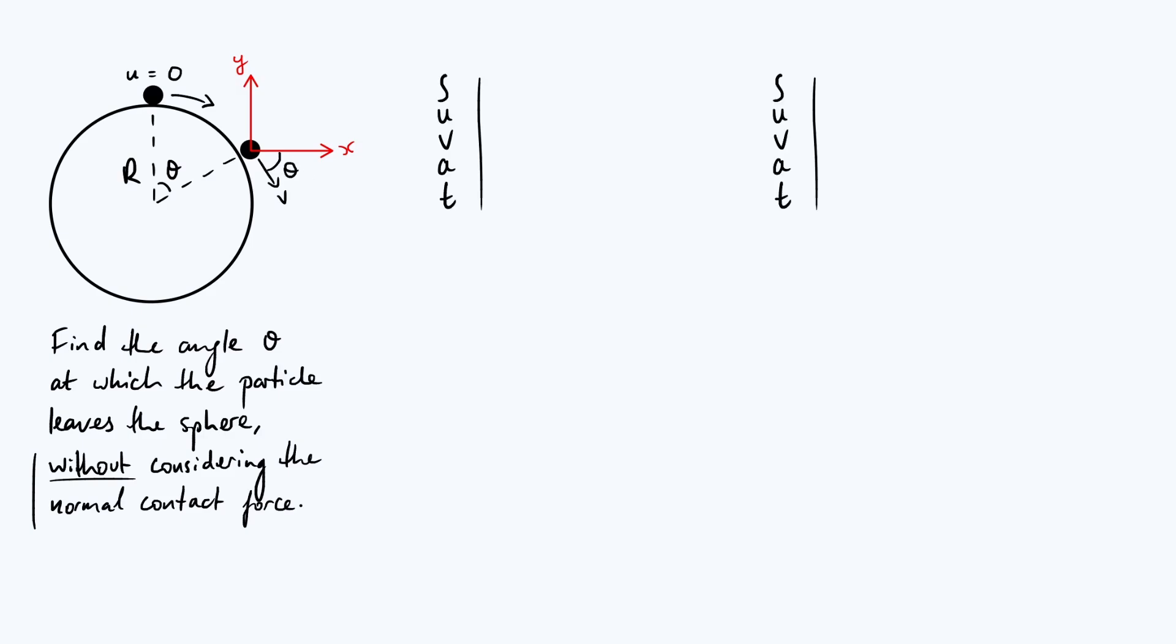I've written out SUVAT twice because as soon as the particle loses contact it's going to be in freefall. The only force acting on it will be its own weight, so it's going to have a constant acceleration of g in the downwards direction. We can apply our constant acceleration equations in the x and y directions independently.